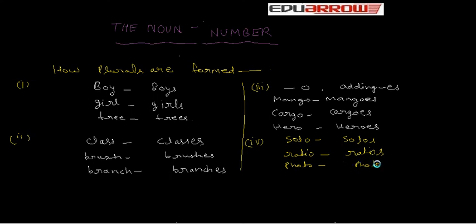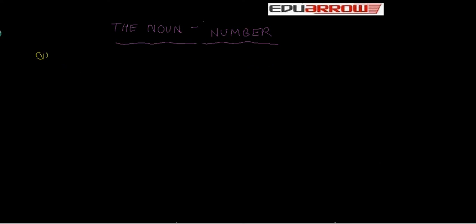Next, nouns ending in Y form their plural by changing Y into I and adding ES. For example, baby, babies; lady, ladies; army, armies.